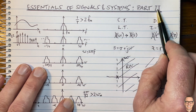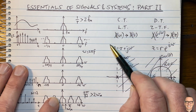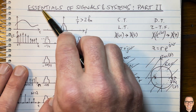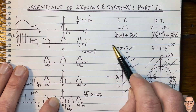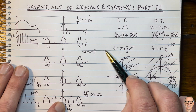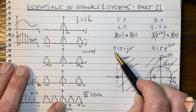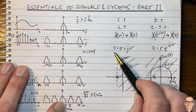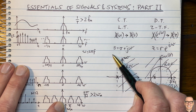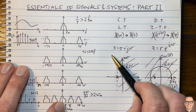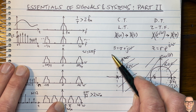These two videos, part one and part two, have summarized the main essential elements of signals and systems. If you found them useful, please like the video — it helps others find it. Subscribe to the channel for more videos, and check out the description below for a link to a webpage with a full categorized listing of all videos on the channel. Thank you.